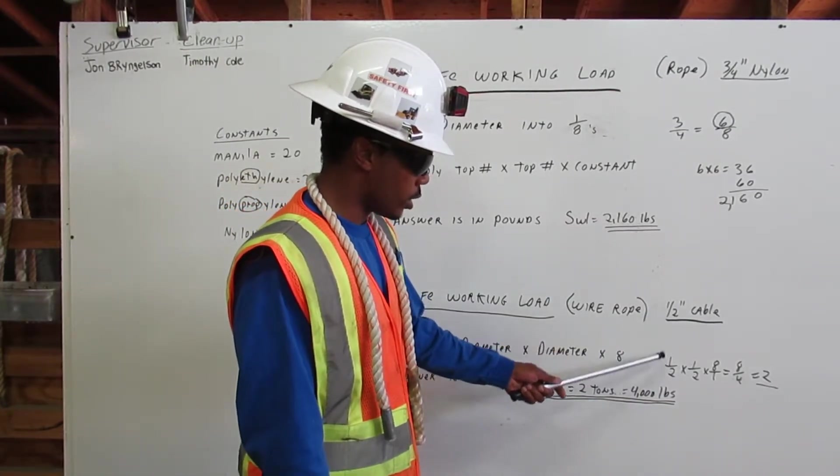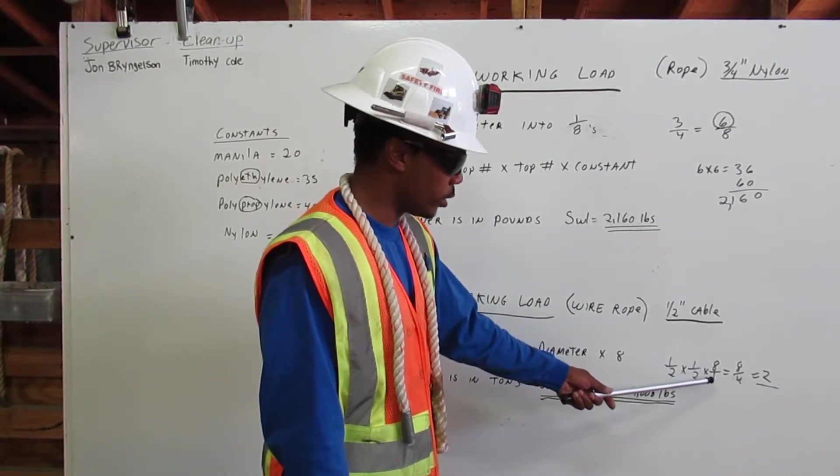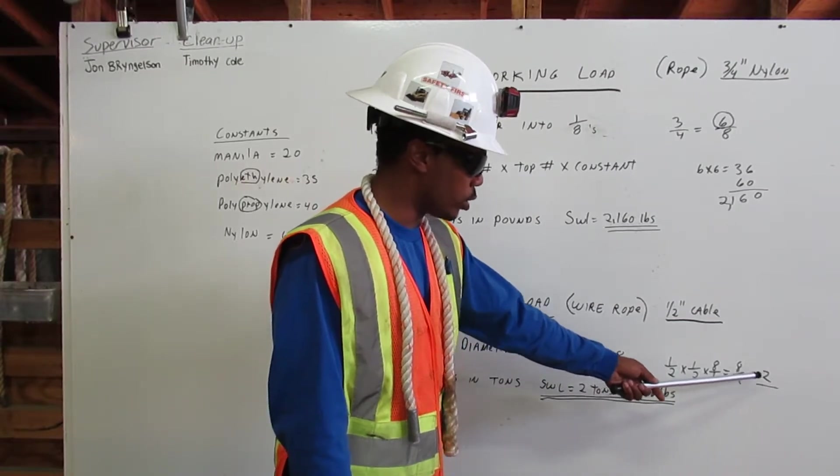The half inch cable, half inch times half inch times 8 over 1 equals 8 over 4, which equals 2.